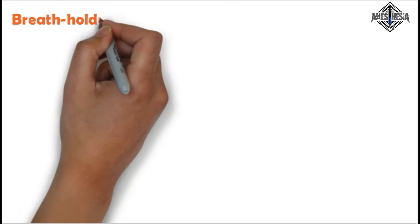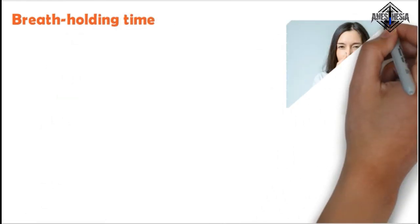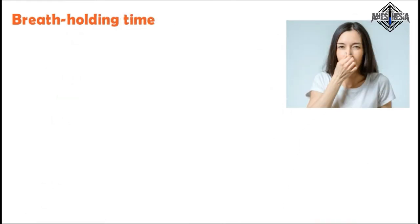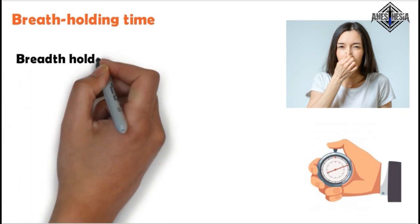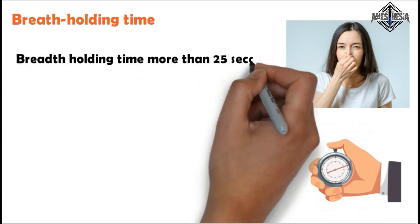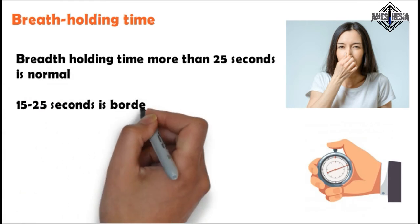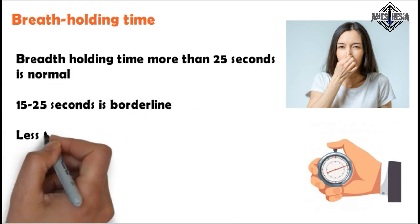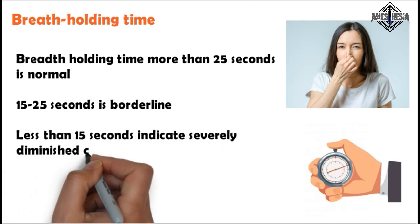In the respiratory system examination, other than routine assessment, breath holding time should be assessed in every patient. It is a simple way to find respiratory problems. The patient is asked to hold their breath after full inspiration. If the patient can hold for more than 25 seconds, they are normal. 15 to 25 seconds is borderline. Less than 15 seconds indicates severely diminished cardiorespiratory reserve.